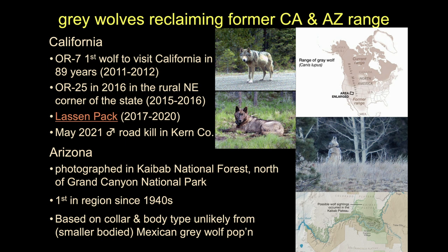Then we have the Lassen pack. The most recent news — in May 2021, an individual got all the way down to Kern County, almost into Ventura County from Oregon, and was then hit by a car. The roadkill part is unfortunate, but the fact that that wolf could travel almost the entirety of the state of California is remarkable. It suggests that if we have the right habitat and we're not over-exploiting, these important predators can reestablish themselves across potentially much of California.